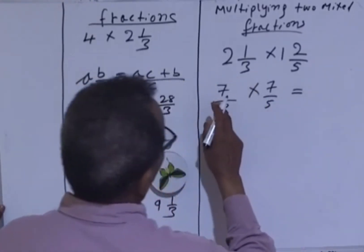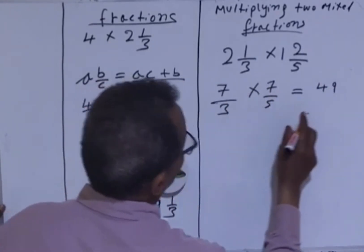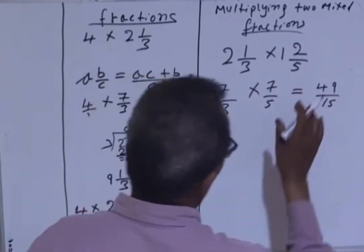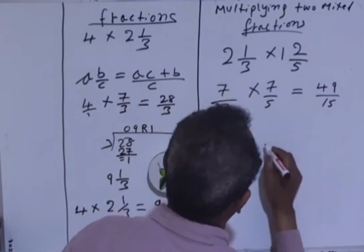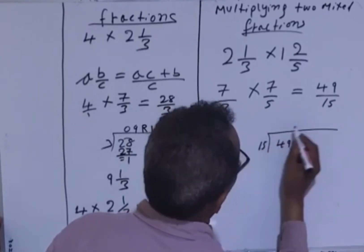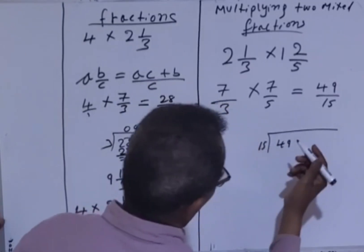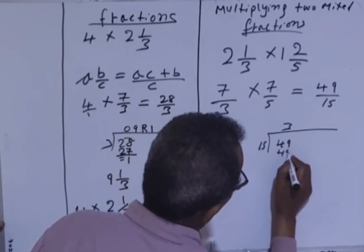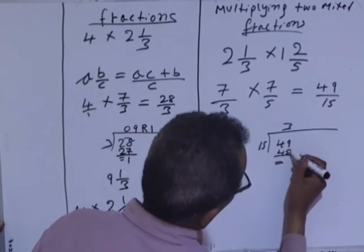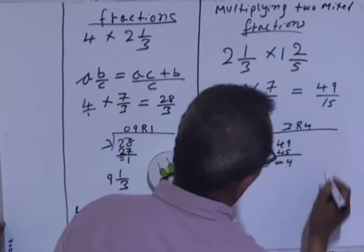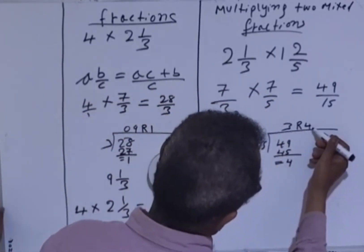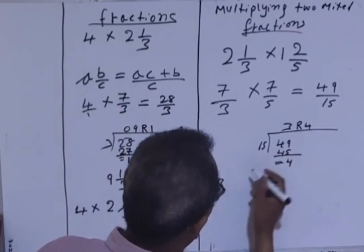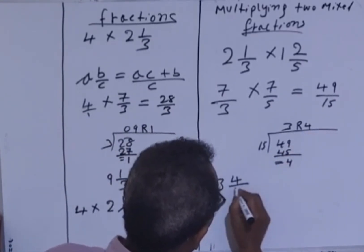So 7 over 3 times 7 over 5 equals 49 over 15. Let's divide 49 by 15 to convert to a mixed fraction. 49 divided by 15: 3 times 15 is 45, so the quotient is 3. 49 minus 45 gives a remainder of 4. So 3 is the quotient and 4 is the remainder — 4 is not yet divided, so we put 4 over 15.